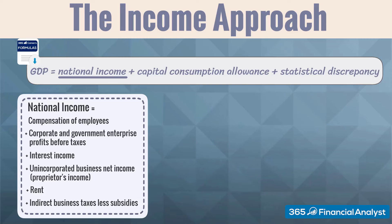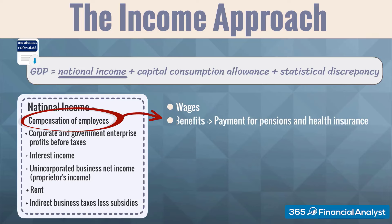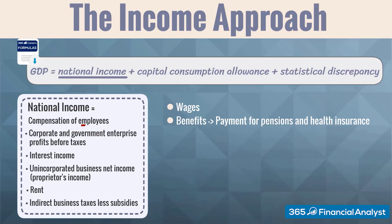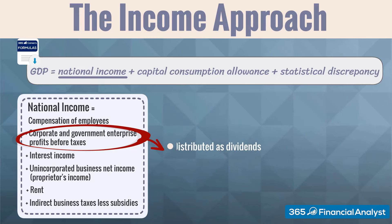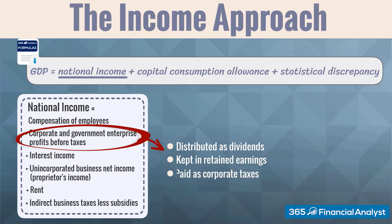Let's now discuss each of the components of the national income equation. First, employees' compensation consists of wages and benefits, which are mainly payments for pensions and health insurance. Second, corporate profits on a pre-tax basis. These may be distributed as dividends to households, kept in retained earnings, or paid as corporate taxes.